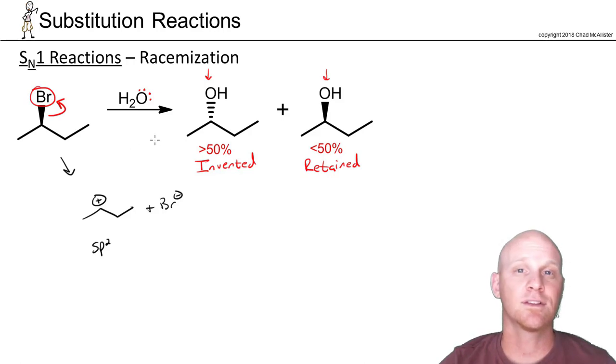And the idea is that this bromine here when it leaves it's leaving from the front side. And even though the nucleophile attacks in a separate step when it leaves it's blocking the water from attacking from that side to a small degree. And so you get a little bit more of the inverted product than the retained. So not a true 50-50 racemic mixture, and that's definitely something you should be aware of.